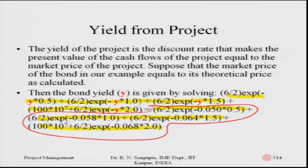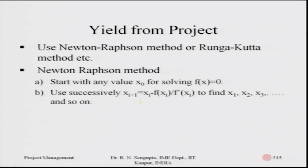To solve for Y we can use the Newton-Raphson method, Runge-Kutta method, or similar iterative approaches. Starting with an initial guess X₀, we successively compute X₁, X₂, X₃ based on the rate of change of the function, converging to a value that gives a good estimate of Y — the yield of the project.